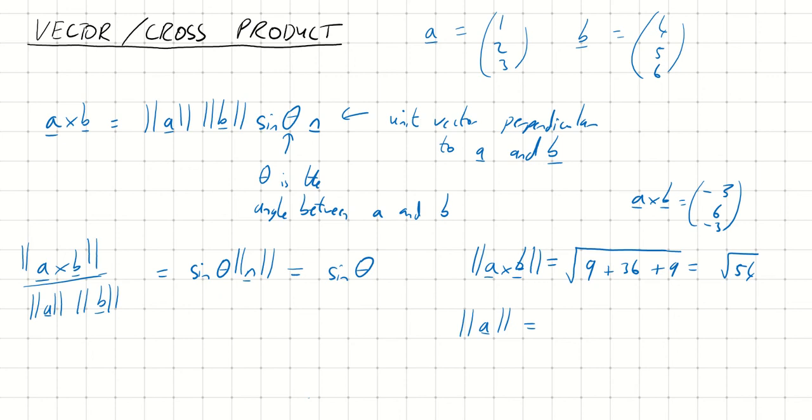Magnitude of A cross B is 54. So the magnitude of A, again used by Pythagoras, it's the square root of 1 squared, plus 2 squared, plus 3 squared, is the square root of 14.